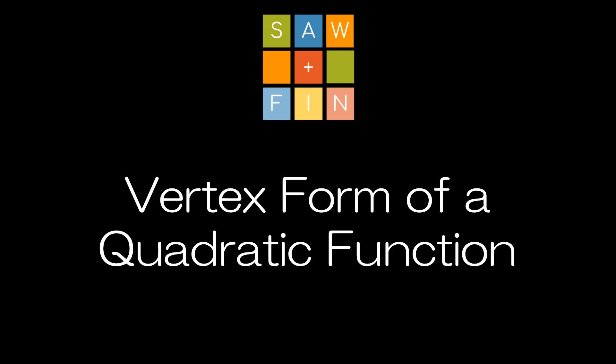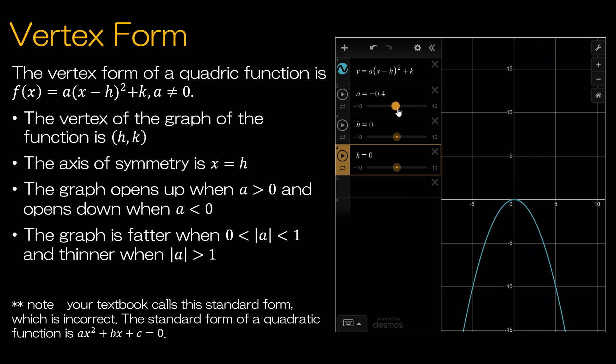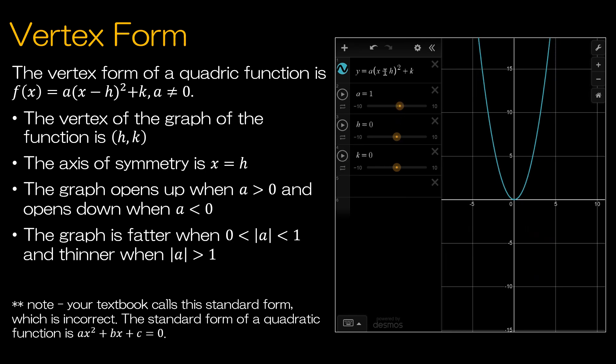Vertex form of a quadratic function. Now let's take a look at vertex form. Keep in mind your textbook incorrectly calls this standard form. The actual standard form is ax² + bx + c = 0. Vertex form is called vertex form simply because you can look at the function and determine the vertex without doing any work. Here in Desmos, h and k represent the vertex — h is the x-value and k is the y-value of the vertex. If I click the slider on h, the parabola moves right and left.